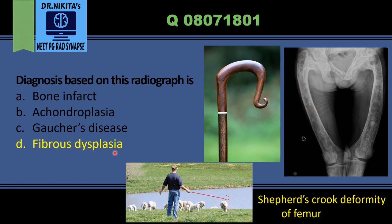A very frequently asked syndrome in exams is the syndrome associated with fibrous dysplasia and precocious puberty — that is McCune-Albright syndrome. It is associated with polyostotic fibrous dysplasia. So for fibrous dysplasia, remember: Shepherd's Crook deformity, ground glass matrix, and McCune-Albright syndrome.